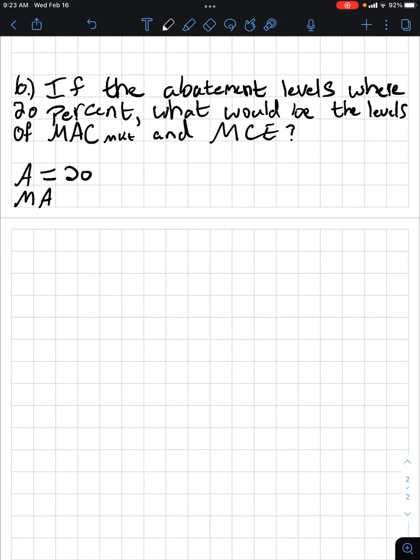Now, we need to find the values for marginal abatement cost of the market, which is going to be equal to 1.3 times 20. And if we plug this into a calculator, we'll get 26 and then we'll get 6.